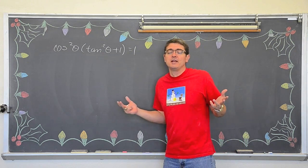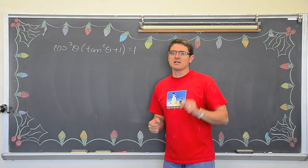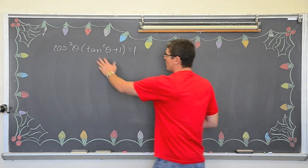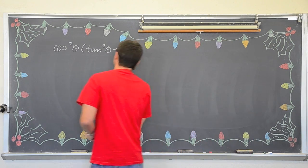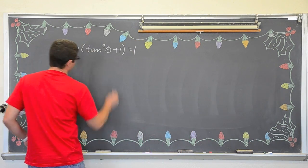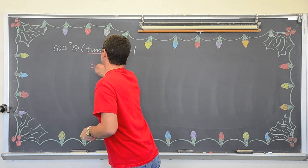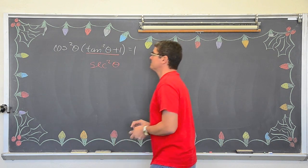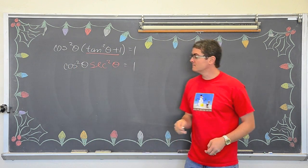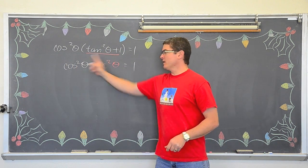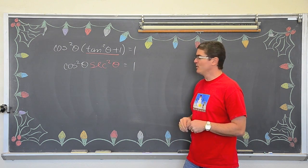Well tangent squared plus one is equal to secant squared. So we can use one of our Pythagorean identities to take this part of the expression out and replace it with secant squared theta. And then we got cosine squared theta equals one. Okay, well we are really close to a final answer. This is just beginning introductory type proof so it is nice and short.